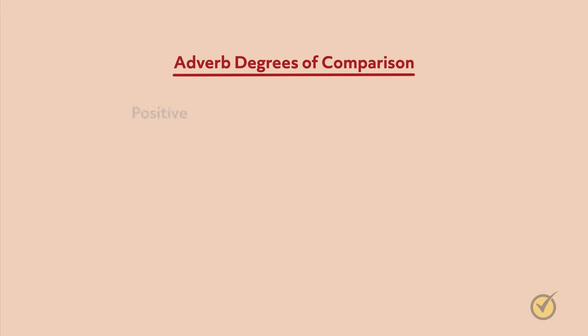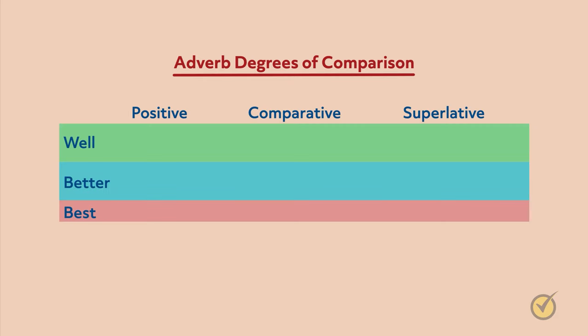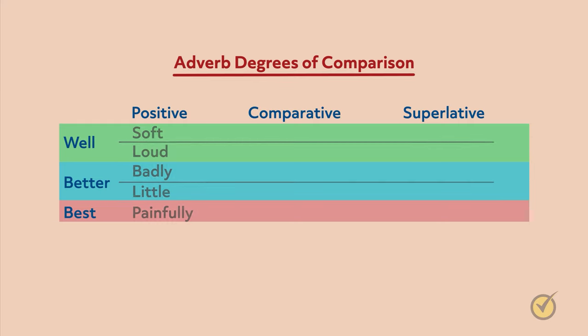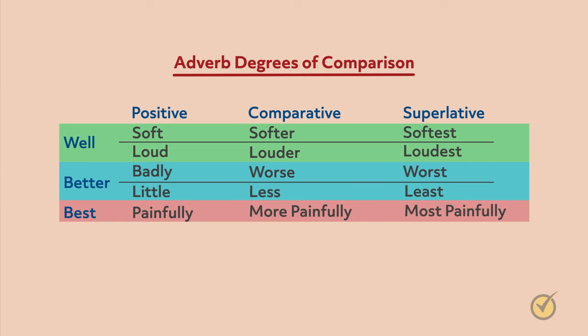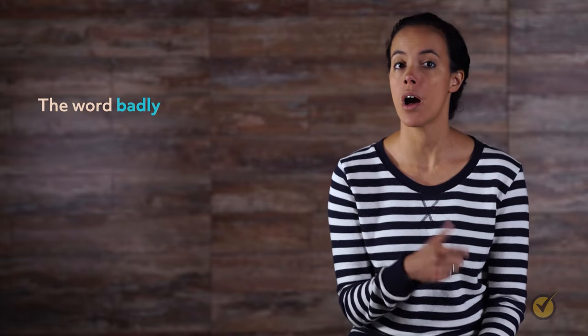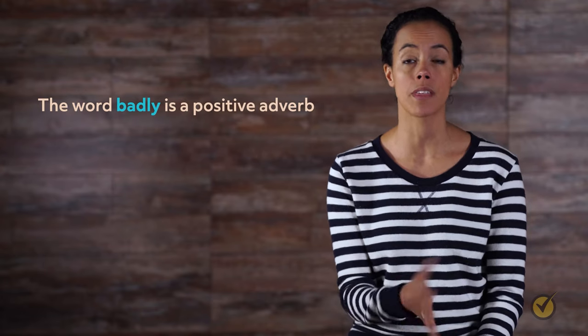Adverbs also describe comparisons of two things. Adverbs have three degrees of comparison: positive, comparative, and superlative — think of them as well, better, and best. When we describe the quality of something, we can say it is done well (positive). We may compare it to something else and say this thing is better (comparative). Or we may say this thing is the best (superlative). Many adverbs can be modified by adding er to make them comparative, or est to make them superlative. The word badly is a positive adverb — it's the first or basic degree used to describe something without comparing it to anything else.